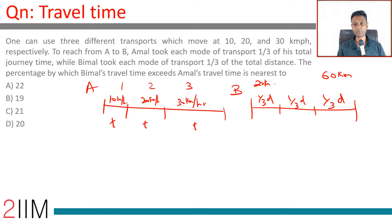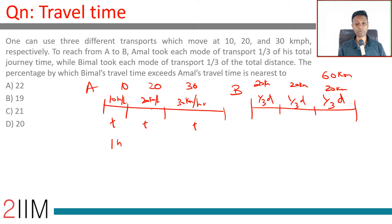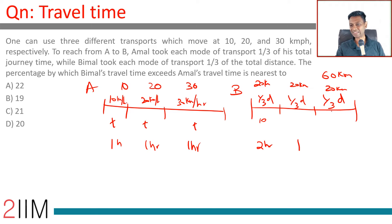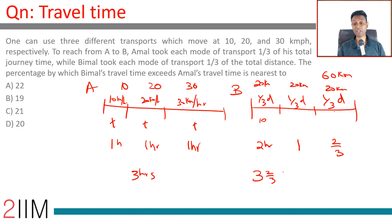Bimal travels 20 kilometers at 10 km/h (taking 2 hours), 20 kilometers at 20 km/h (taking 1 hour), and 20 kilometers at 30 km/h (taking 2/3 of an hour). Bimal's total time is 3 and 2/3 hours. Amal took 3 hours.